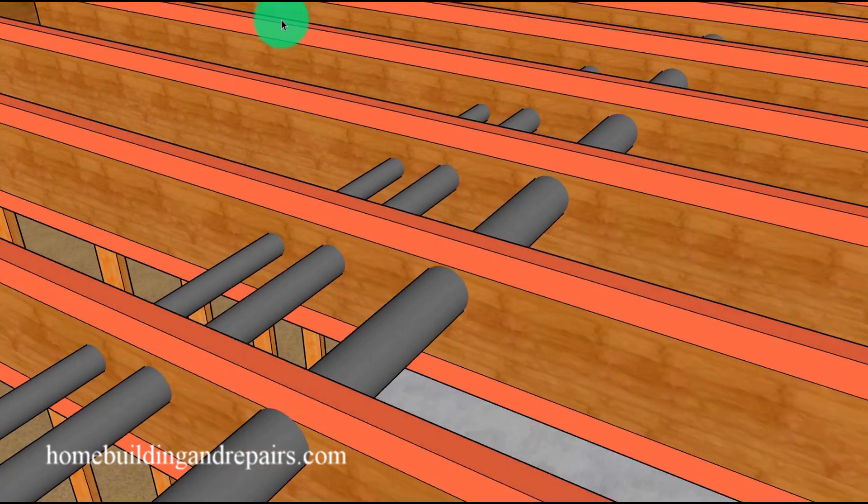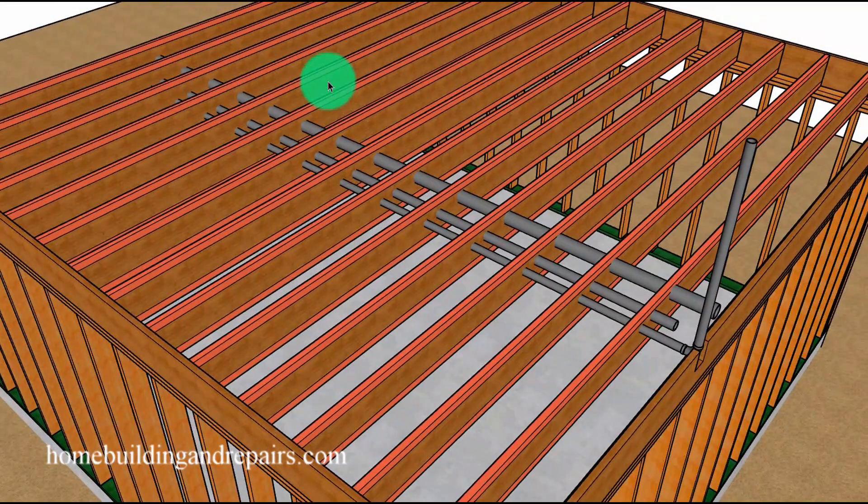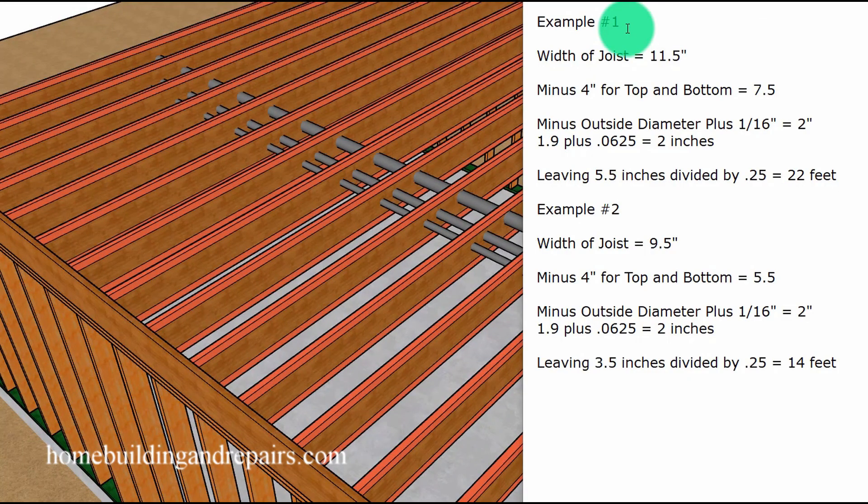Next up, let's take a look at the simple math formula. So in example one, I am going to use the existing floor joist, which is going to be a two by 12, along with an inch and a half inside diameter plumbing pipe.